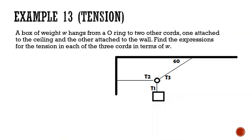Let's look at Example 13. A box of weight W hangs from an O-ring attached to two other cords — one attached to the ceiling and the other to the wall. Find the expression for the tension in each of the three cords. We have three tensions: T1 on this string, T2 on this string, and T3 on this string, plus a box of weight W.